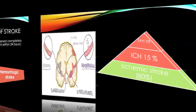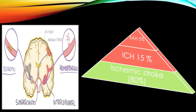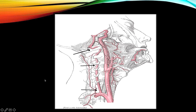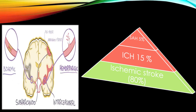Ischemic stroke is the most prevalent, accounting for 80% of all strokes. Hemorrhagic stroke accounts for 20%, and is divided into subarachnoid hemorrhage and intracerebral hemorrhage. In subarachnoid hemorrhage, bleeding occurs below the arachnoid membrane, increasing intracranial pressure and damaging brain tissue. In intracerebral hemorrhage, blood vessels inside the cerebrum rupture and cause leakage of blood in the brain. In ischemic stroke, the blood vessel becomes stenosed, causing reduced blood flow.